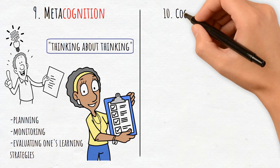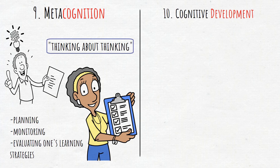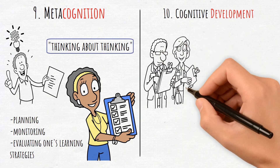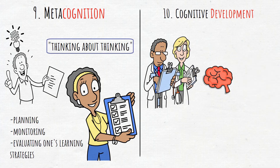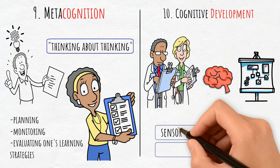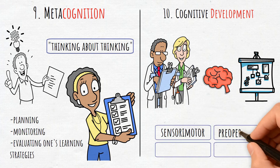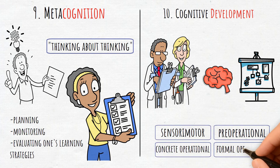10. Cognitive Development. Cognitive development is the study of how thinking evolves over time in different stages, including sensorimotor, pre-operational, concrete operational, and formal operational.